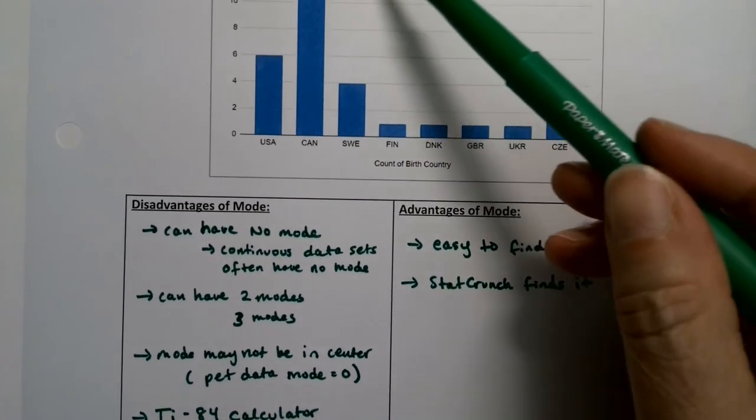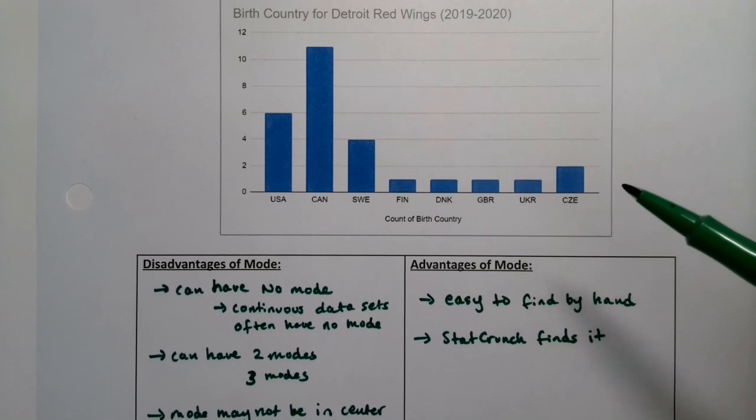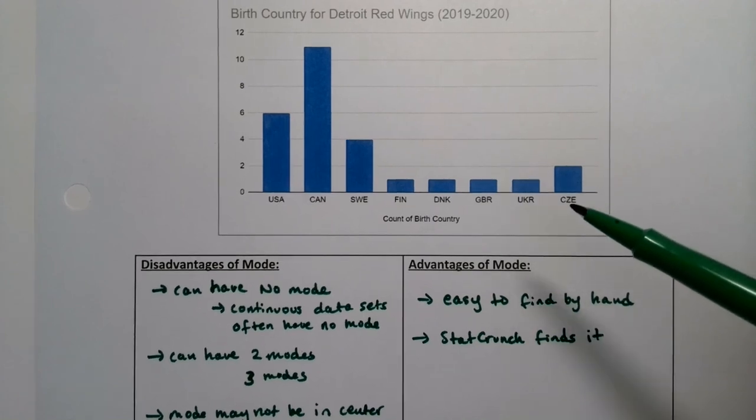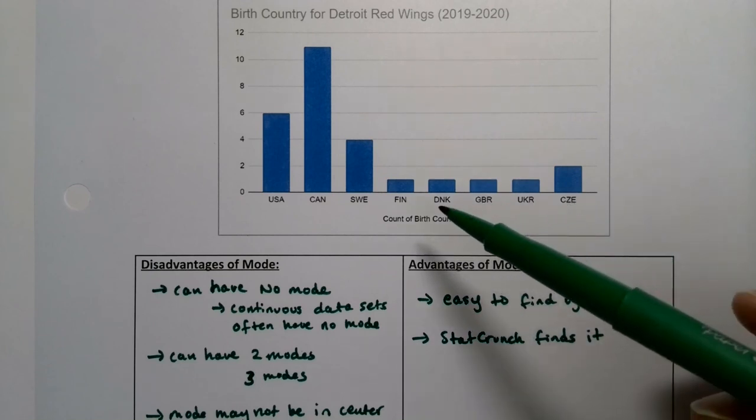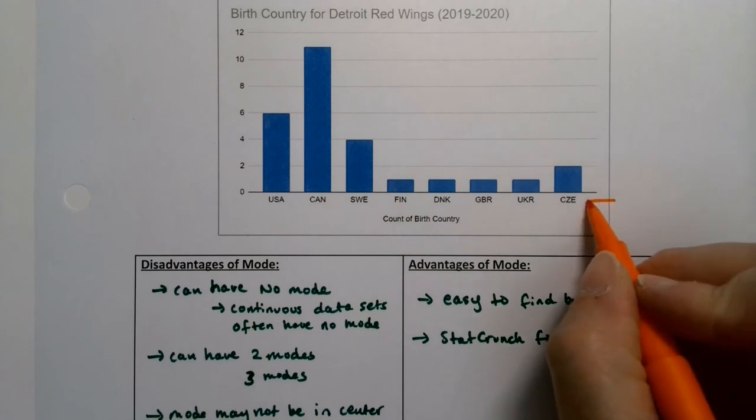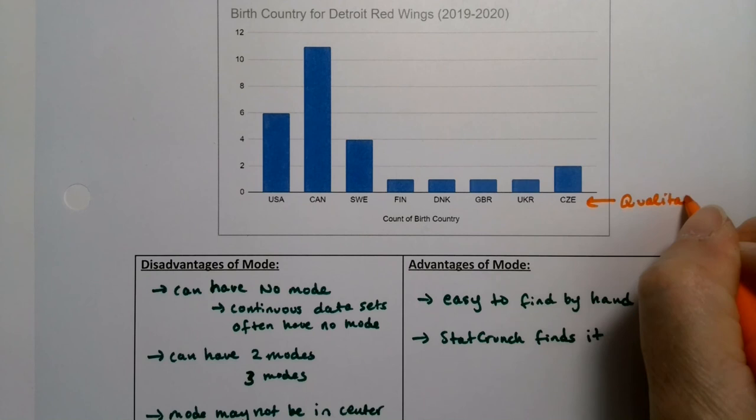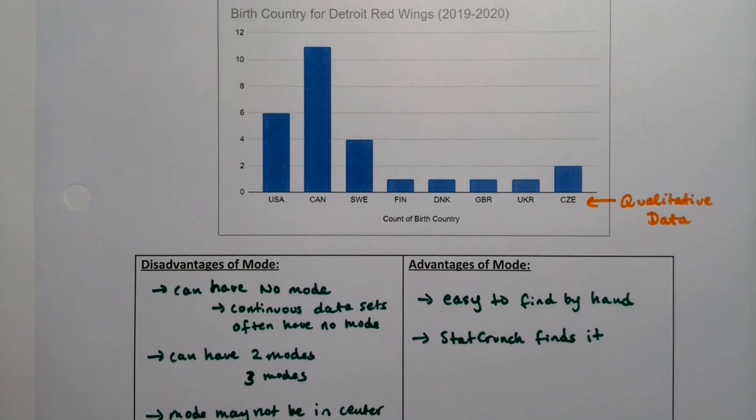And it's this example right here with the hockey, not because it's hockey. It's the only method of center we have available to us for qualitative data. See that horizontal axis? That's the country of origin. That's qualitative data that we are gathering here. So the country of birth.